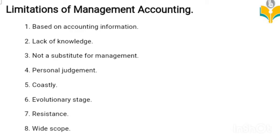Fourth: personal judgment. While interpreting the results, the management accountant uses personal judgment. These personal judgments may not always be correct, as the decisions and reports depend upon the capability, capacity, and knowledge of the management accountant. Fifth: costly. Management accounting is costly, and heavy investment is required for its installation, hence it is not suitable for small enterprises.